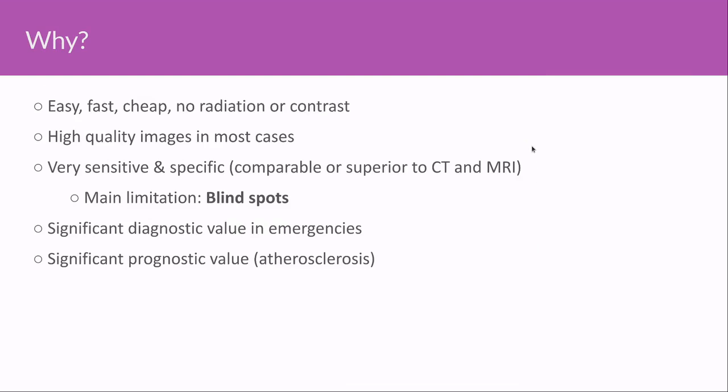So why bother? Imaging of the aorta is quite easy — it only involves a few views that are easy to conceptualize. It's very fast, done in under a minute. It is cheap, with no radiation or contrast. It gives very high quality images in most cases that are as sensitive and specific, if not more so, than CT or MRI. The main limitation is the blind spots, which we'll discuss.